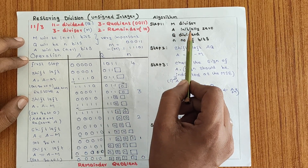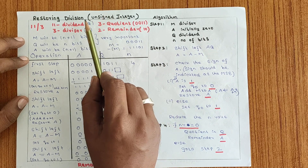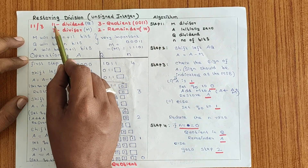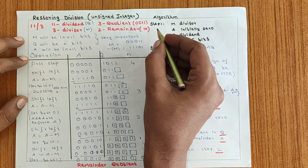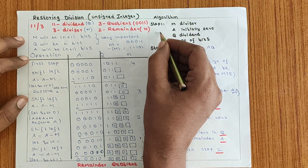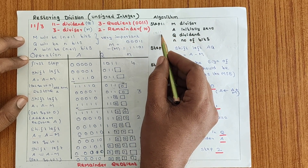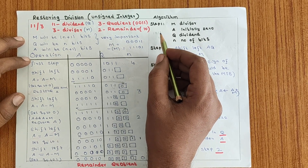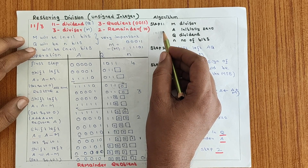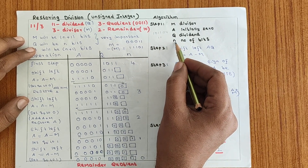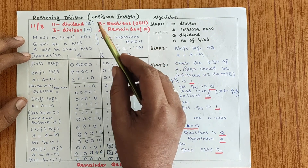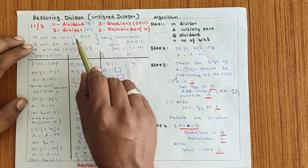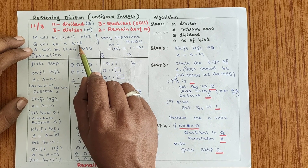A is initially loaded with 0, and Q is a dividend — here, dividend is 11. N represents number of bits. 11 is represented in binary as 1011, which is 4 bits. The dividend is maximum, so we take N=4. According to this algorithm, M should be taken as N+1 bits — that is 5 bits — while Q will be N bits, so Q is 4 bits.